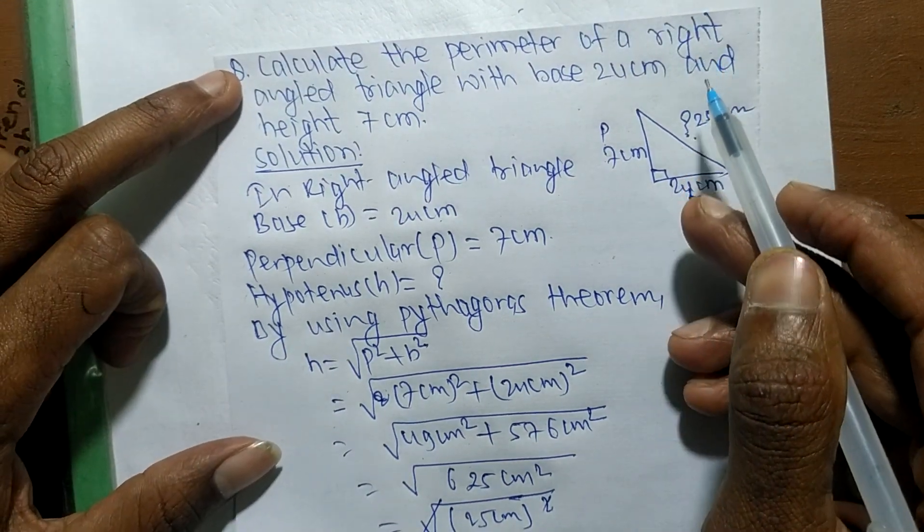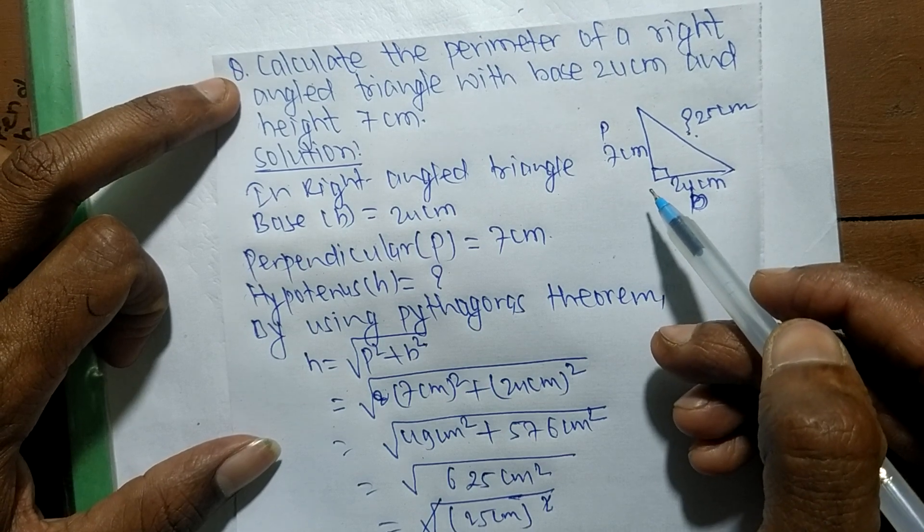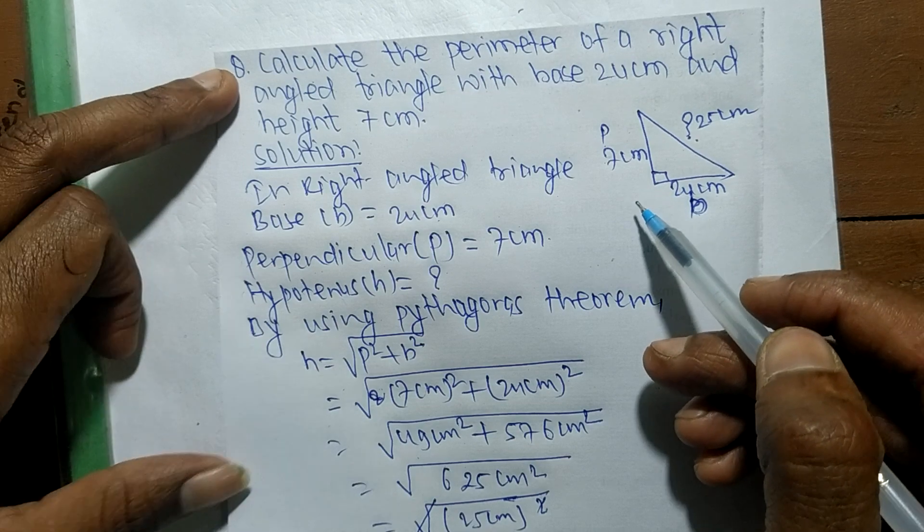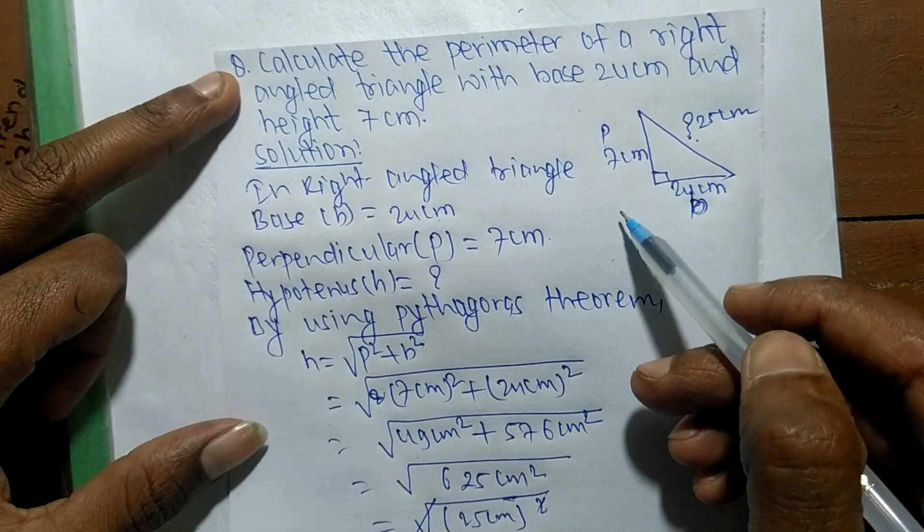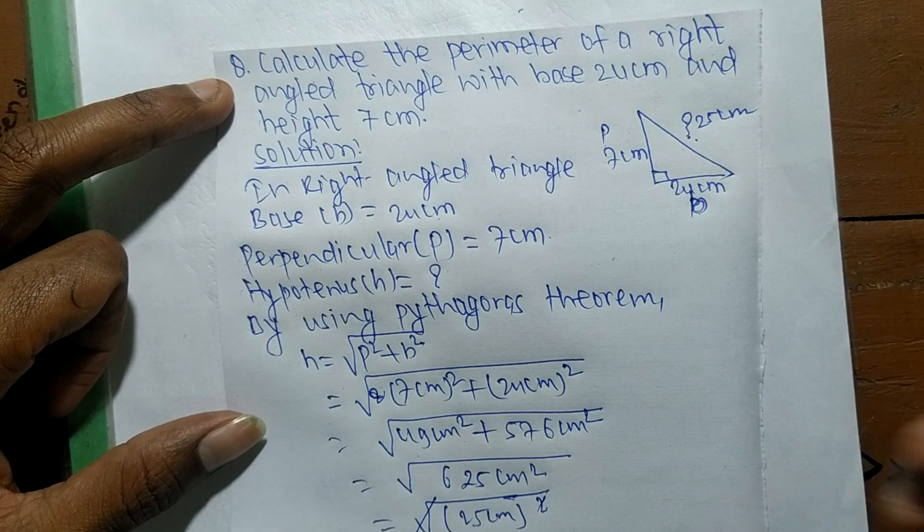When in any problem there is given a right-angled triangle with two sides, then by using Pythagoras theorem first of all we have to determine its third side, and after that we have to determine its perimeter. So this much for today, and thanks for watching.